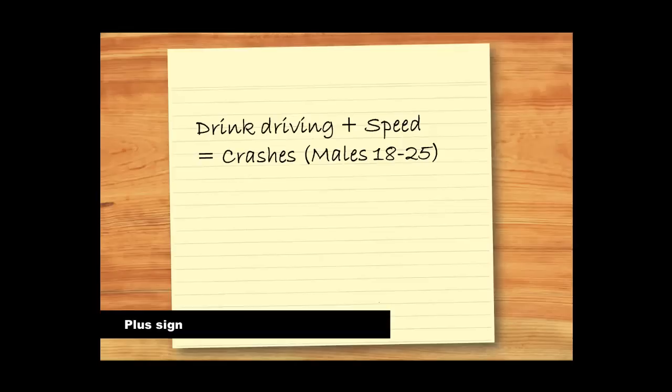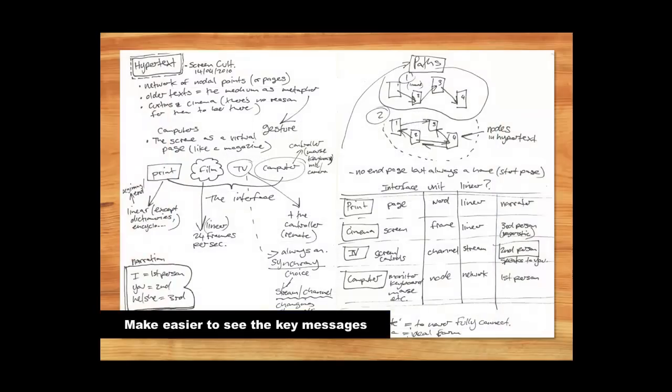So all of these tips, using headings, subheadings, bullet points and numbers, using abbreviations and acronyms, using boxes, circles and arrows to map out connections between ideas, and using math symbols as a way to express relationships, all serve to make your notes more streamlined. This will make them easier to look back on and understand what the key messages are.